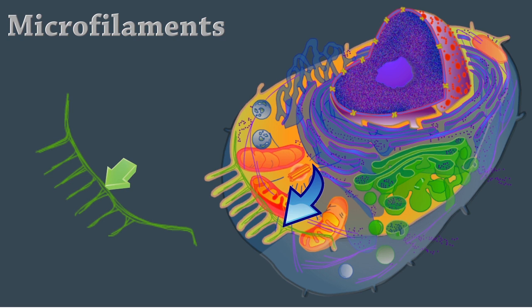Microfilaments are fine filaments of the contractile protein actin. They're involved in muscle contraction and other types of intracellular movement. They help form the cell's cytoskeleton, cilia, and, if it's present, the flagella.